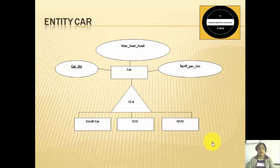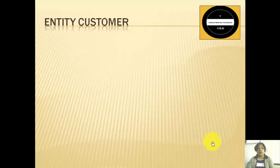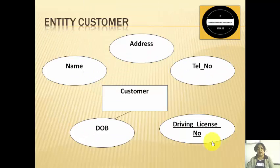A small car inherits the characteristics of the parent car entity, so it will also have car number, maximum seats available, and tariff per kilometer. Apart from that, child entities can have specific attributes. Here we have taken the specific attribute as number availability — that is, how many small cars, SUVs, and MUVs are available. Next, the entity customer is identified in this case study by the driving license number. If it is not mentioned, you can also keep a customer ID. We have assumed attributes: name, address, telephone number, and date of birth.